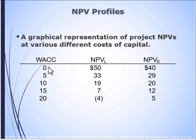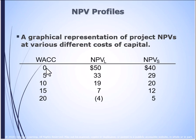Here you see a short table with our weighted average cost of capital ranging from zero to 20, and we calculated the net present value for each project, L and S, at each different weighted average cost of capital. Hopefully you will notice that as the weighted average cost of capital increases — as the discount rate increases — the value of the asset decreases. So there is a negative relationship between required returns and value.